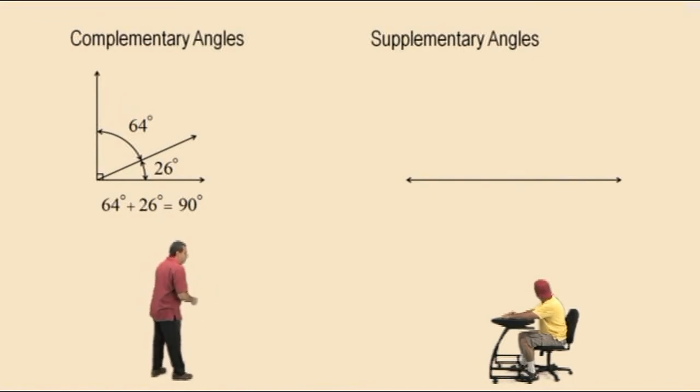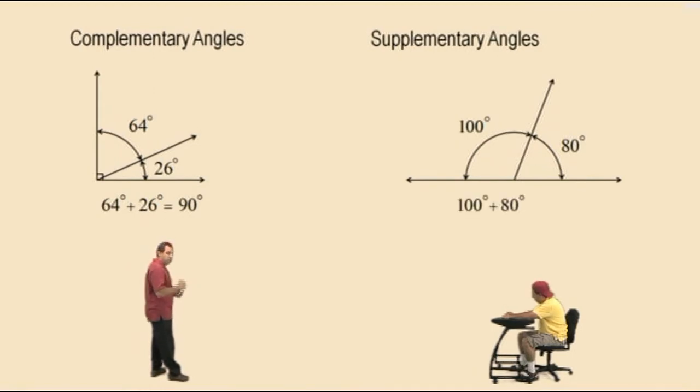Now, for supplementary angles, if one angle is 80 degrees, the other angle must be 100 degrees because supplementary angles sum to 180, forming what we call a straight angle. And therefore, we would say 100 degrees plus 80 degrees is equal to 180 degrees.